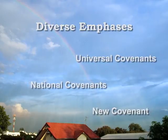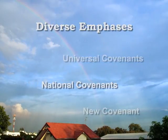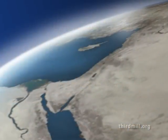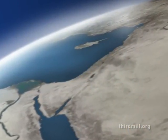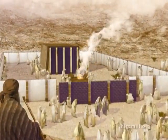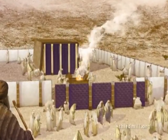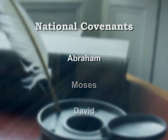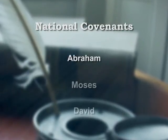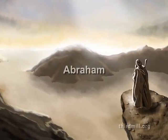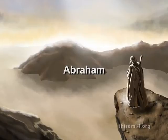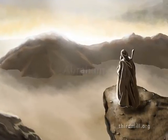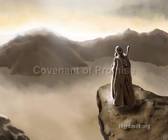Following the universal covenants, God established national covenants with his special people Israel: the covenants with Abraham, Moses and David. In these stages of history, God narrowed his covenantal attention primarily to just one ethnic group, establishing Israel as the nation that would lead the rest of humanity in service to God. We find explicit references to Abraham's covenant in Genesis chapters 15 and 17. The covenant with Abraham emphasized promises for the numerical increase of Israel and possession of the promised land from which Israel was to spread God's blessings to the entire world. And for this reason, Abraham's covenant may be characterized as a covenant of promise.